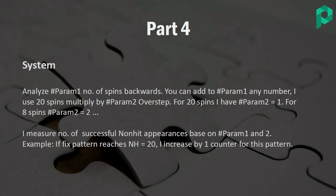To give you an example: if my fixed pattern — say 0, 10, 20, 30 — has a real non-hit (not a cluster non-hit, but a real non-hit from the last appearance of the fixed pattern), for example zero hit and then 20 spins with none of those four numbers appearing, then the non-hit count is 20. When it reaches exactly 20, because you set up the 20-spin analysis, you increase a certain counter for this pattern by one, indicating this fixed pattern has reached the non-hit threshold of your first parameter.